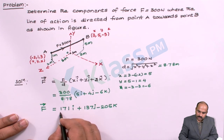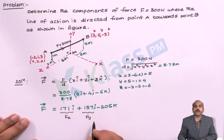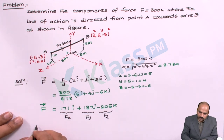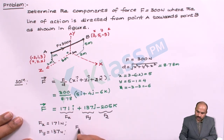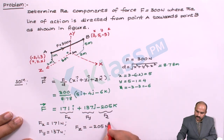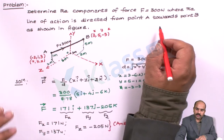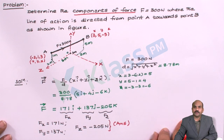The first value is the force component about the x-axis, the second is the component about the y-axis, and the third is the component about the z-axis. So the force component Fx equals 171 N, force component Fy equals 137 N, and force component Fz equals 205 N. These are the components and the answers for this problem. The problem is now completed.